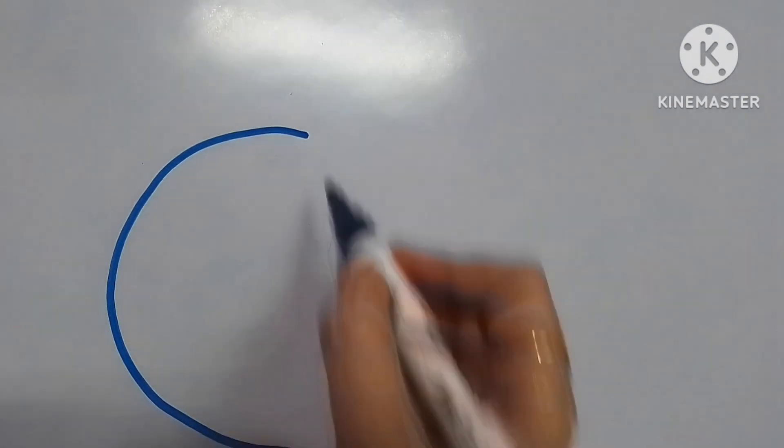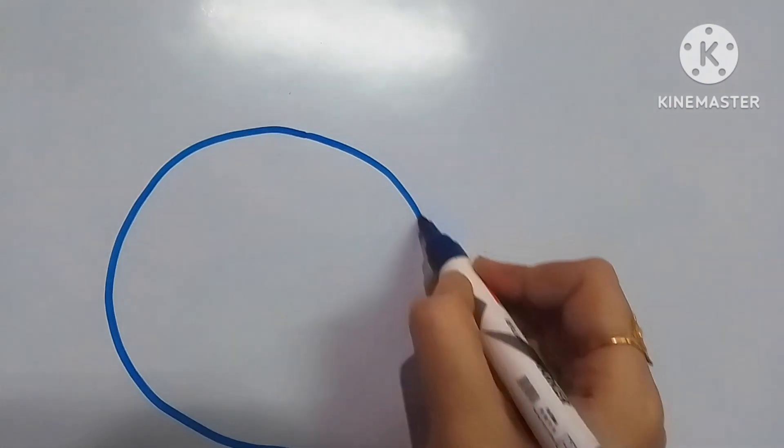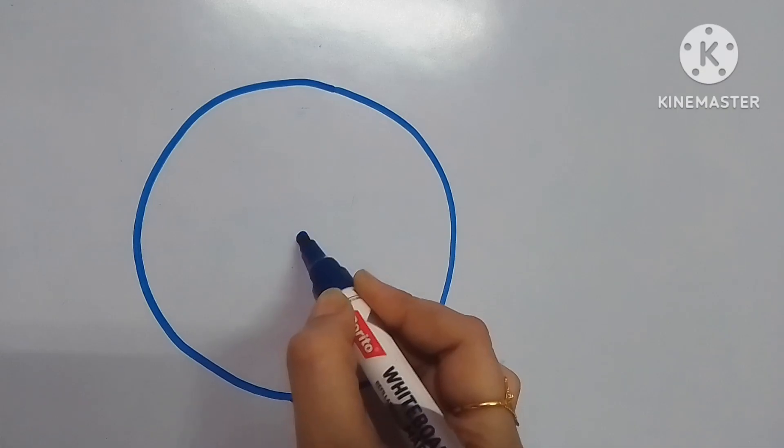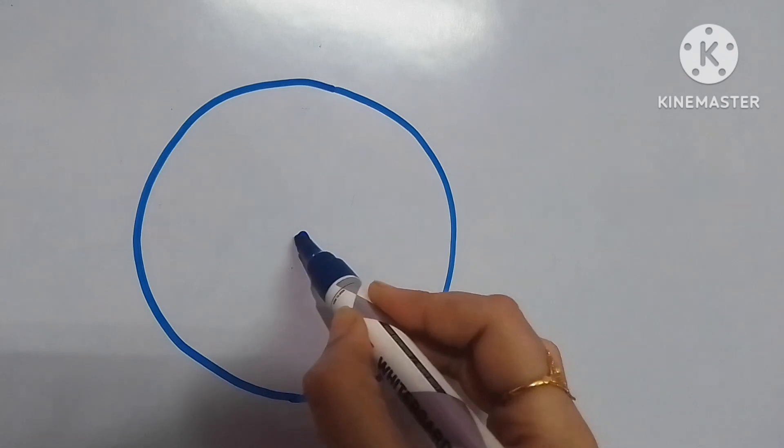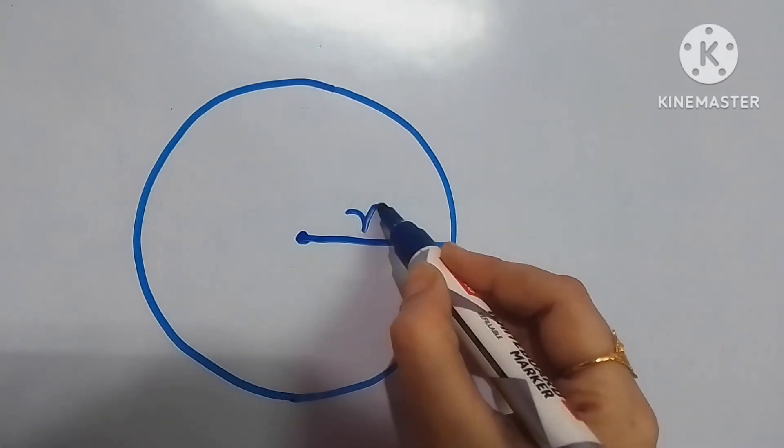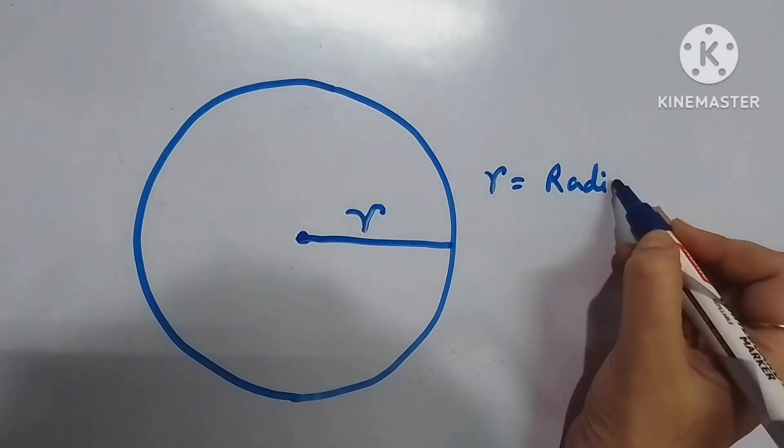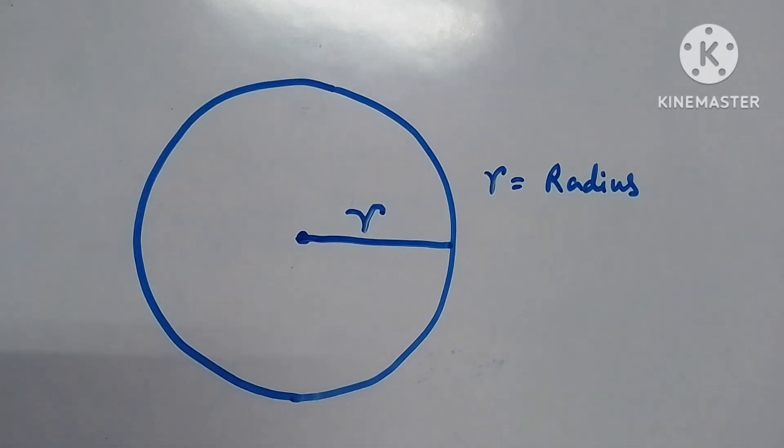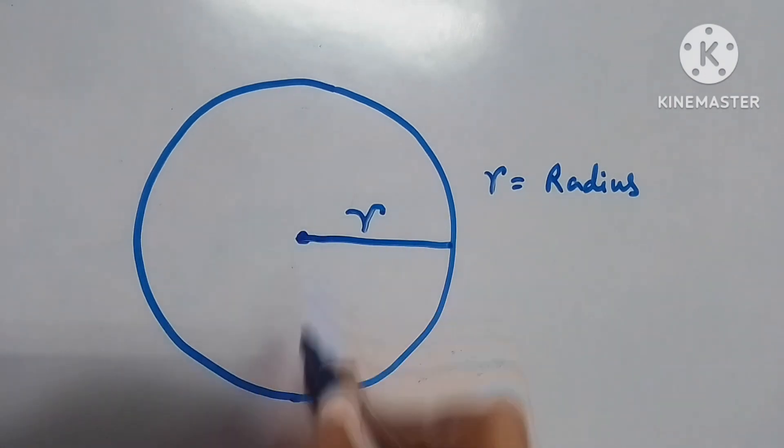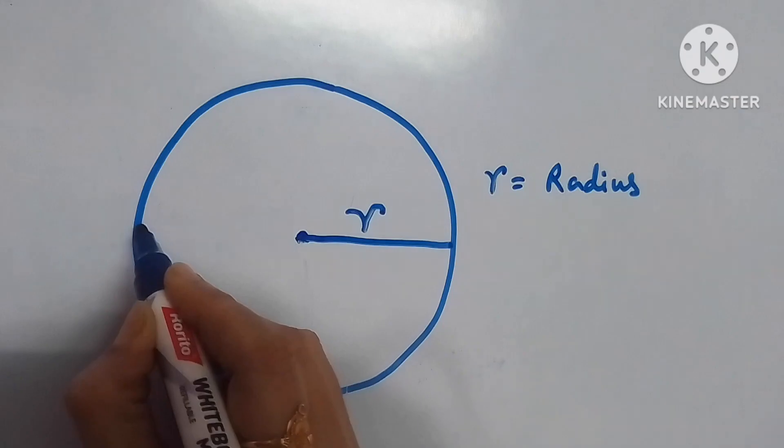Now suppose this is a circle and I am pointing out the center of the circle as O and the connecting straight line from the center to any point on the boundary will be r, means radius. So radius can be drawn from any point and connecting straight line from the center.